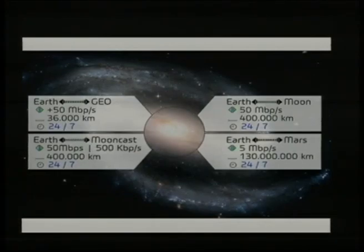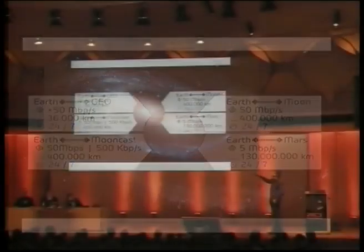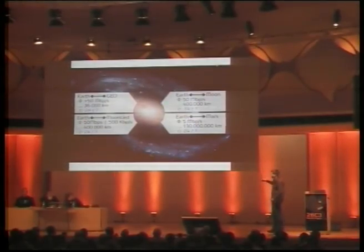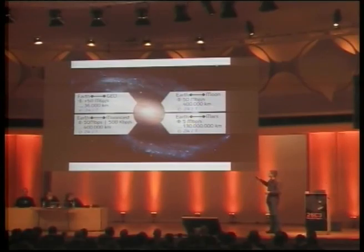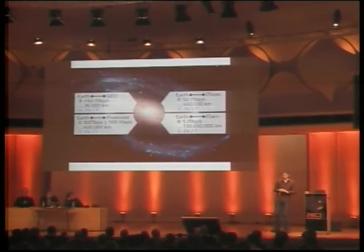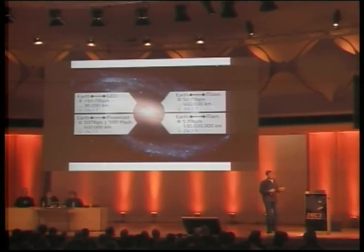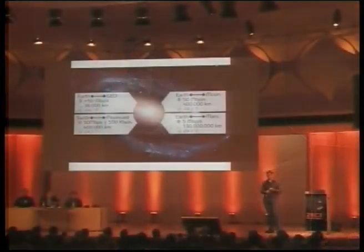Earth to the moon is quite easy — it's similar to geostationary orbit because the distance isn't that much bigger. If you look at Earth to the moon, it's again 50 megabits, but not more. If you calculate 100 link stations on the entire Earth, with at least half of them facing the object you're communicating with, you could end up with a bandwidth from Earth to Mars of 5 megabits at a distance of 130 million kilometers. Currently, NASA has Mars exploration missions going on and they are using only about 50 kilobits of bandwidth for downstream communication with Earth, with a maximum of around 1 megabit.